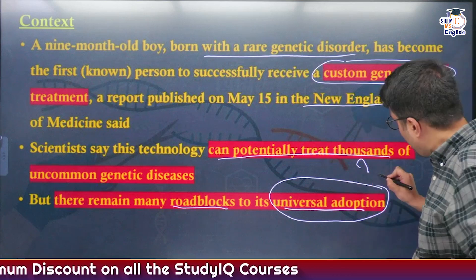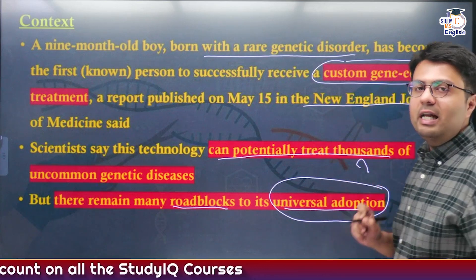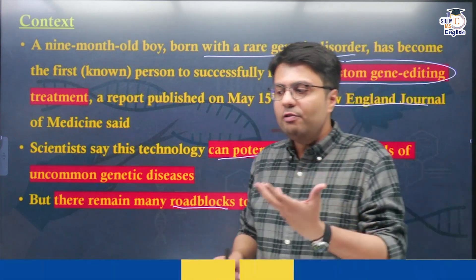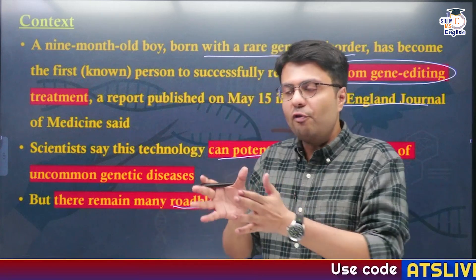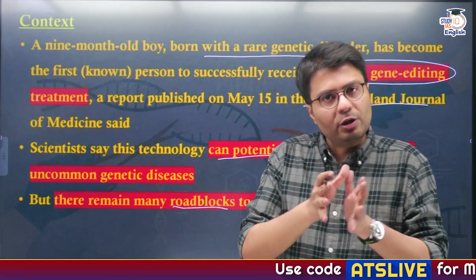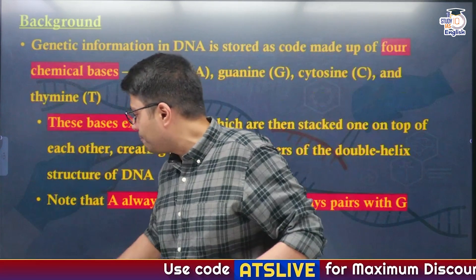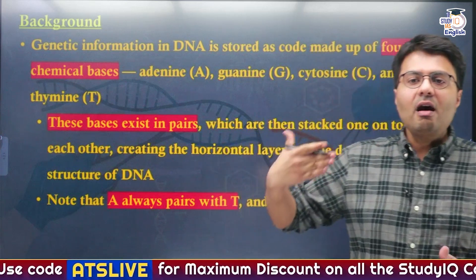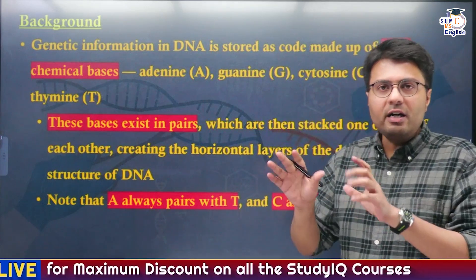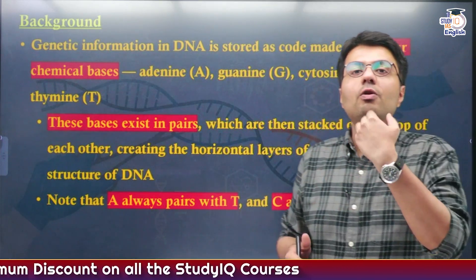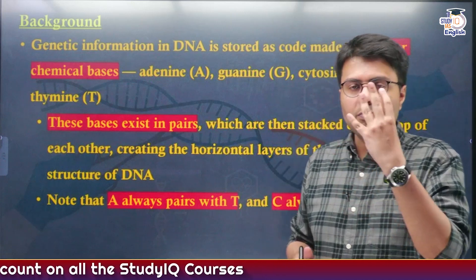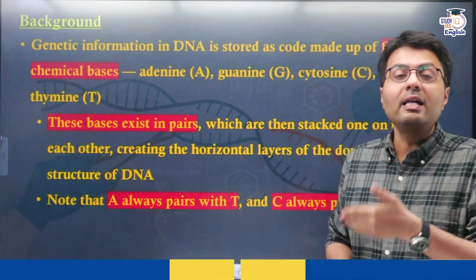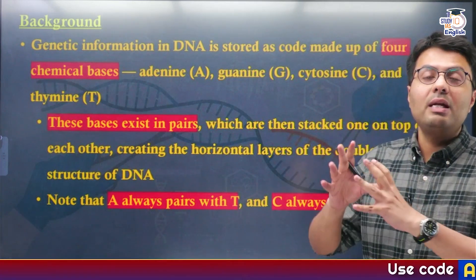What are these roadblocks? I will tell you in today's discussion. Let me give you the basic understanding before we move on to the CRISPR-Cas9 editing system. The genetic information in our DNA is coded or stored in four different nucleotide bases: adenine, guanine, cytosine, and thymine.